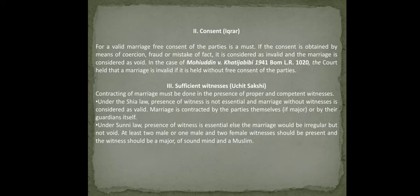The third essential element is sufficient witnesses. Contracting of marriage must be done in the presence of proper and competent witnesses. Under Sunni law, the presence of witnesses is essential; if there are no witnesses at the time of contracting marriage, the marriage will be irregular, not void. At least two male witnesses, or one male and two female witnesses, should be present.